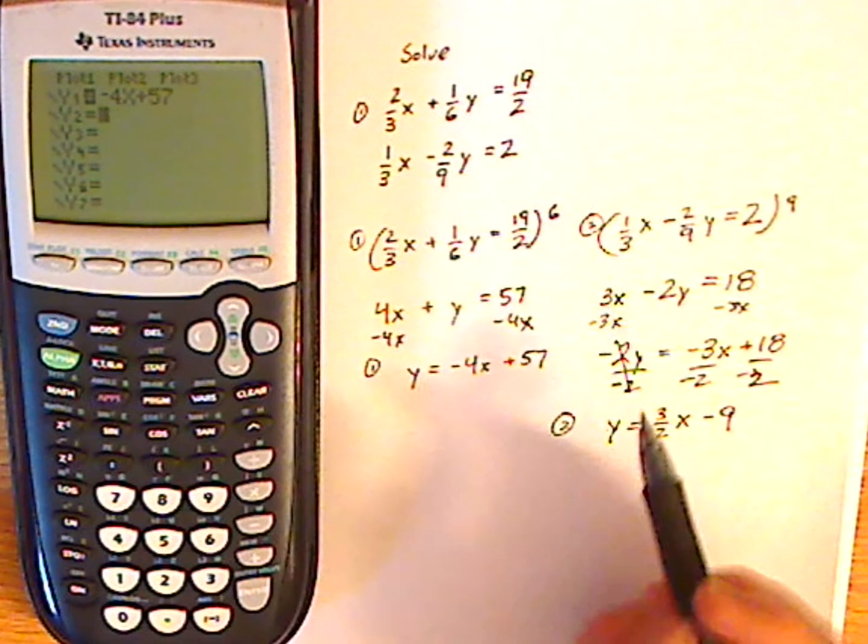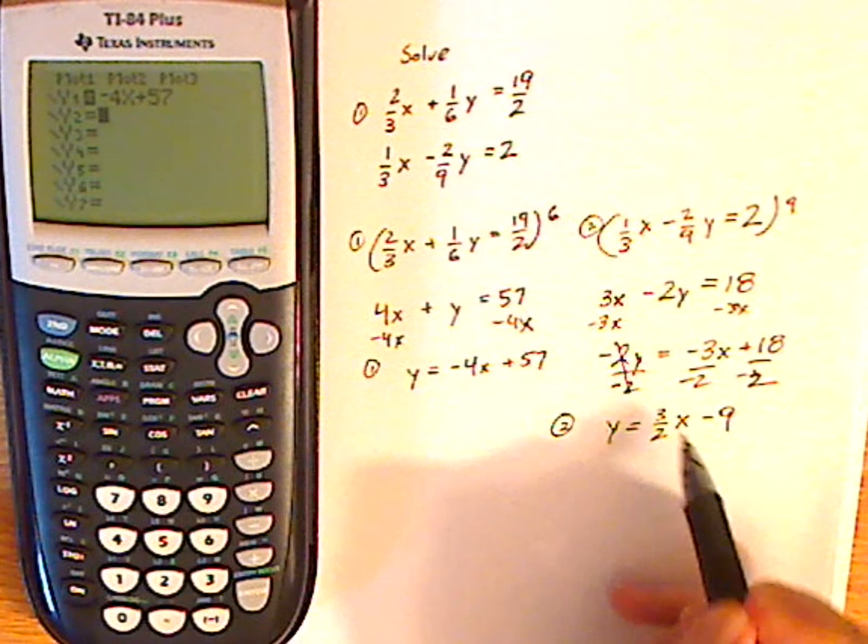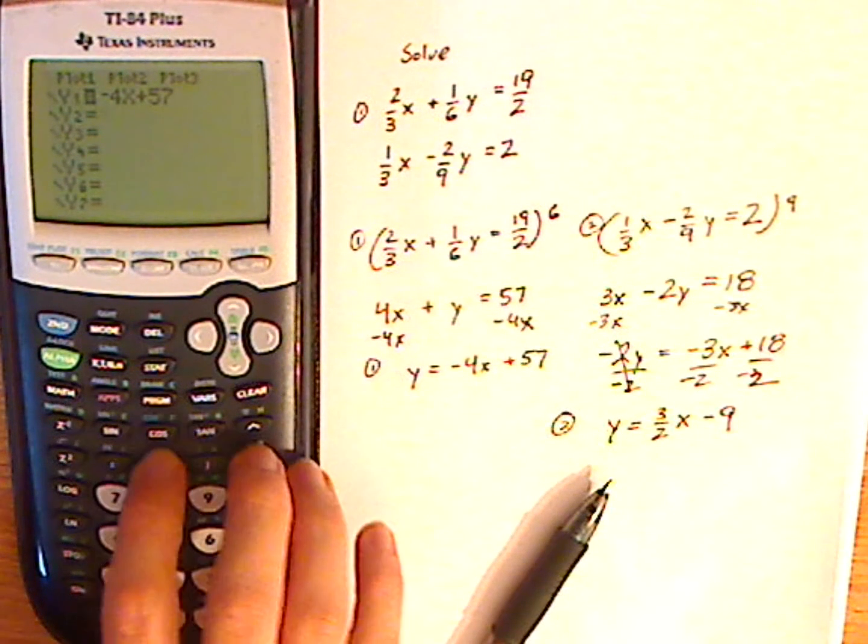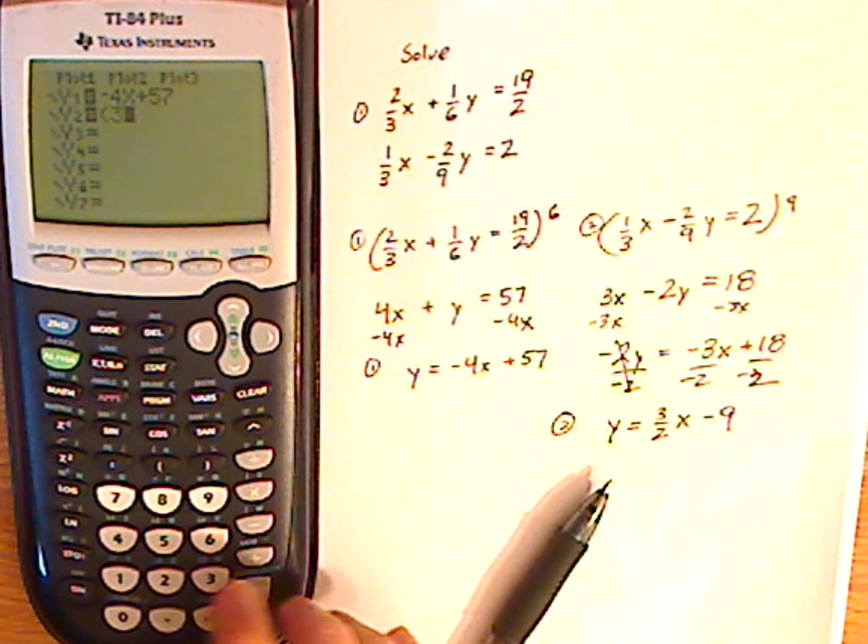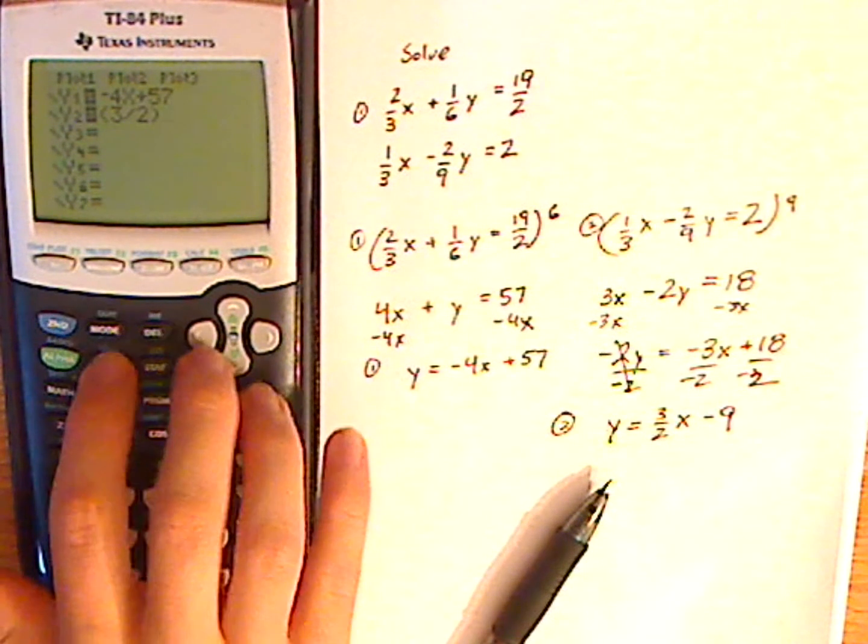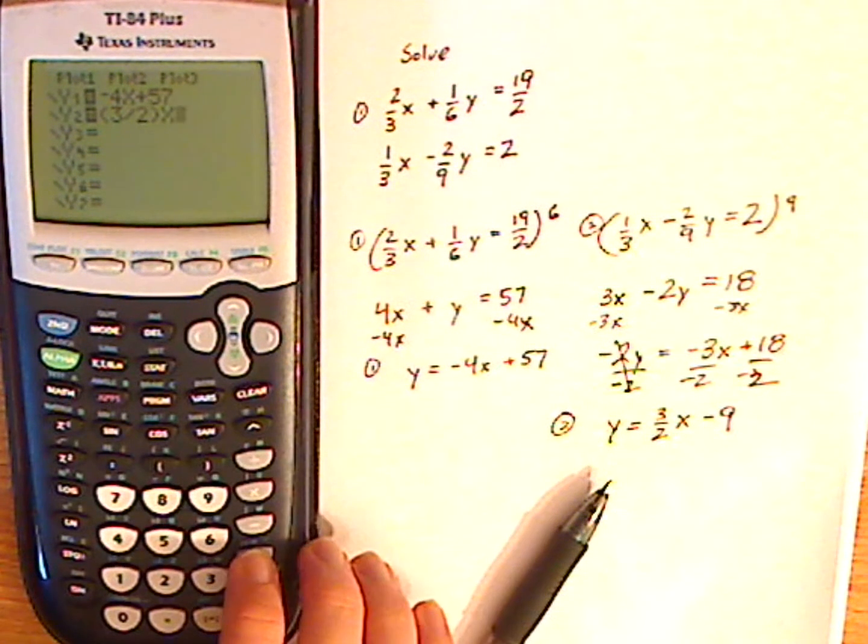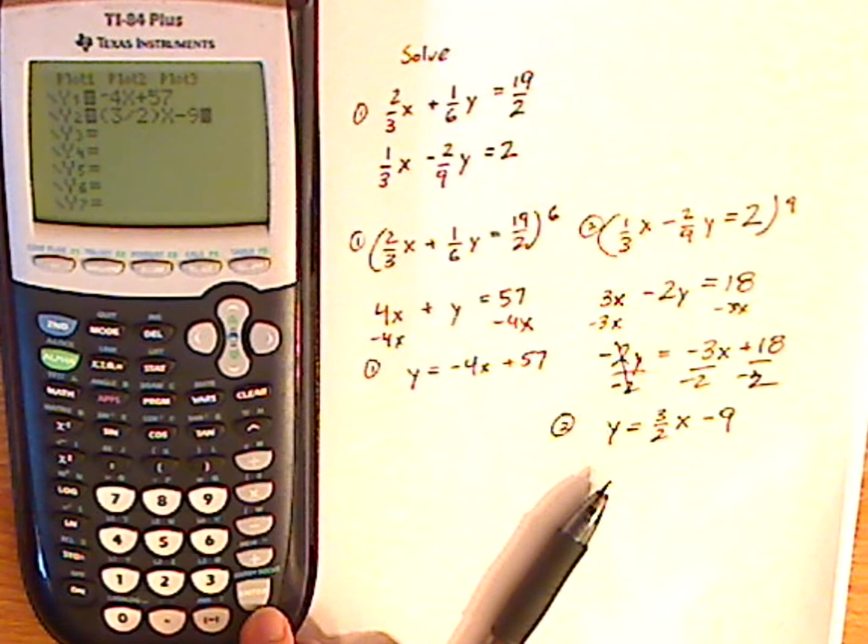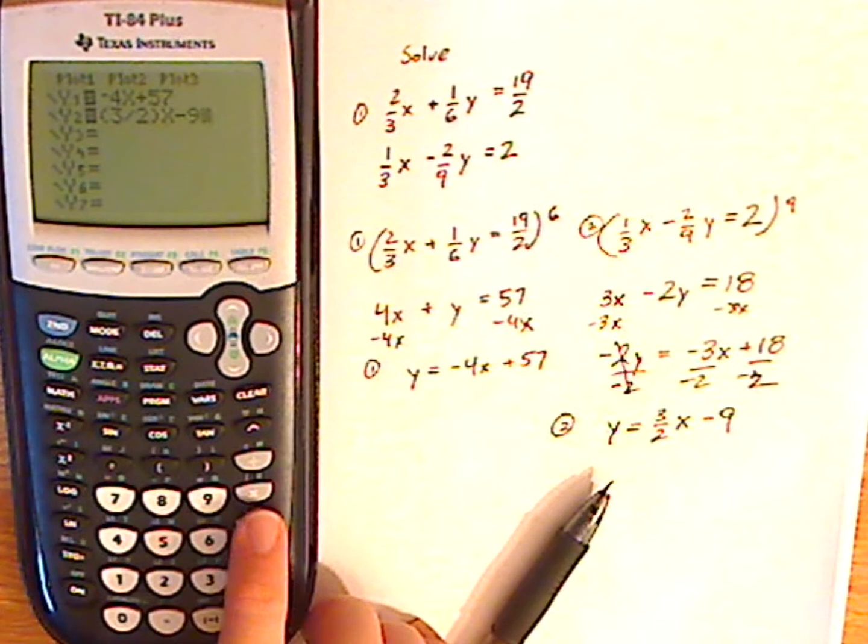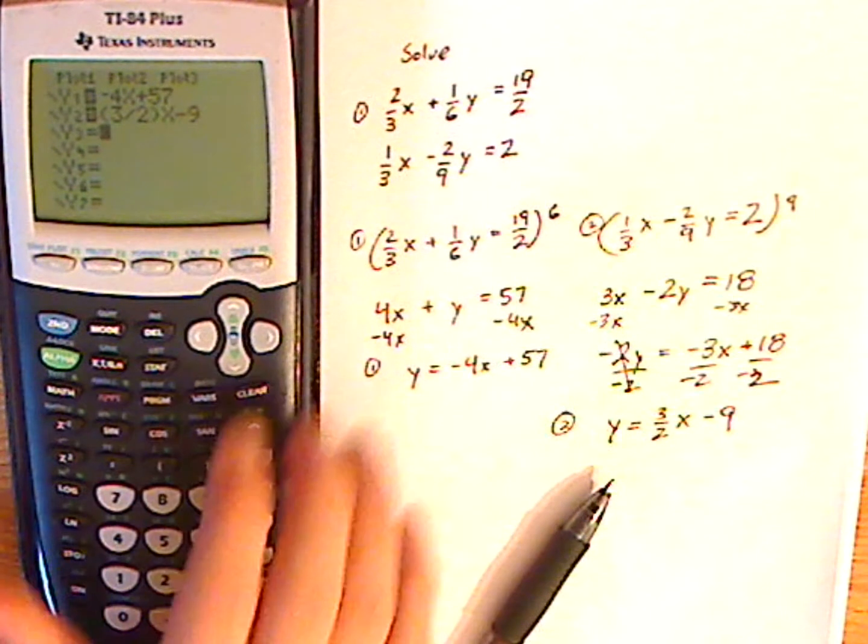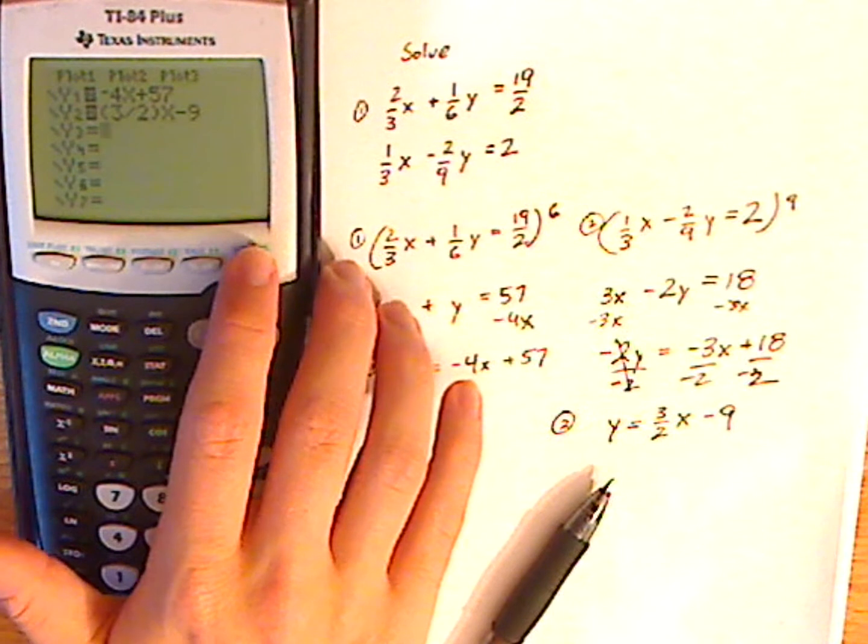Now for the second one, you have 3/2x. So I'm going to put 3/2 in parentheses, 3/2, and then x minus 9. You want to make sure that you push the minus sign here, not the negative sign. So then push graph.